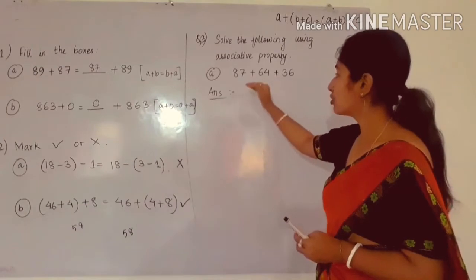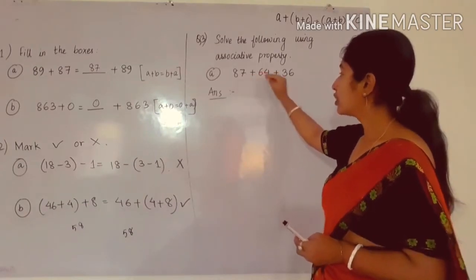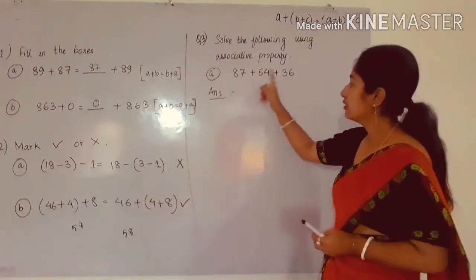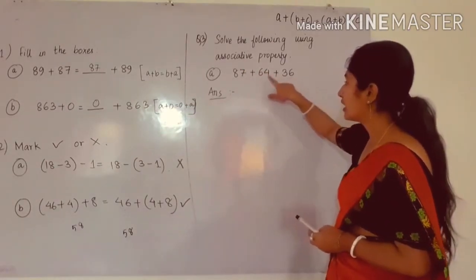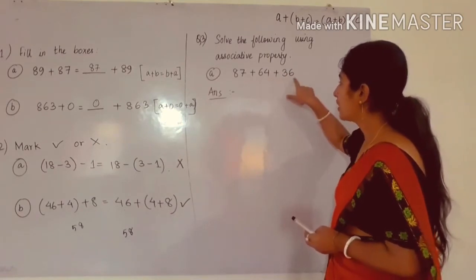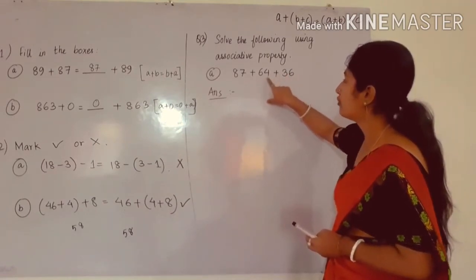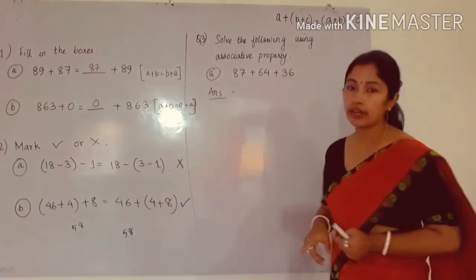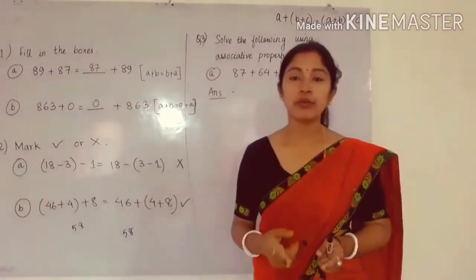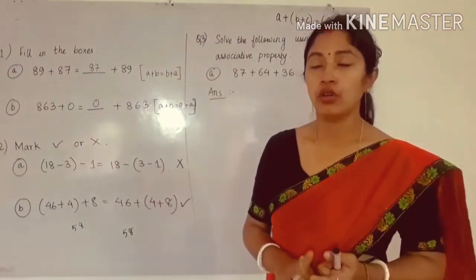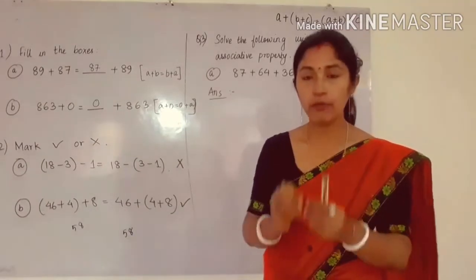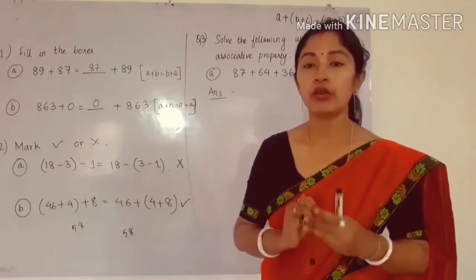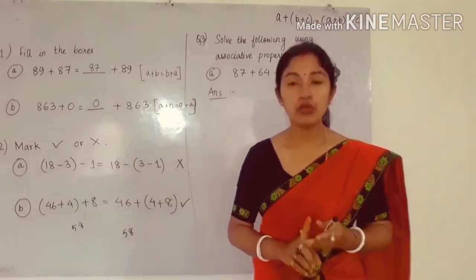In question number A, we need to see which two numbers to take first. We have 64 and 36 — you can easily see the ones place. In the ones place, you have 4 and 6. When you add 6 and 4, you will get 10, and in 10, the ones place is 0. So you have to see which numbers you can add so that the ones place will be equal to 0.